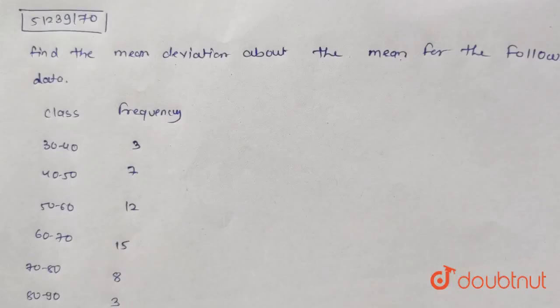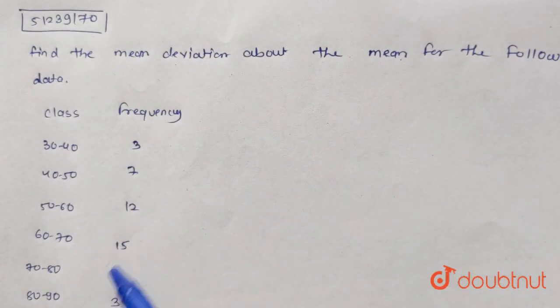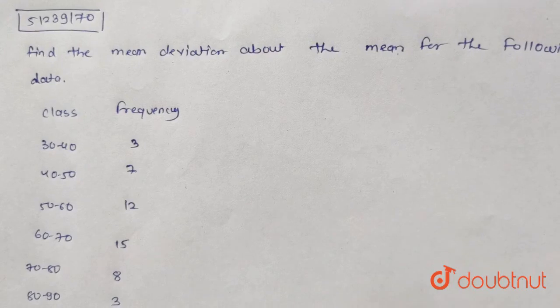Hello, one and all. Now, here the given question is, find the mean deviation about the mean for the following data, where class is given and frequency is given.